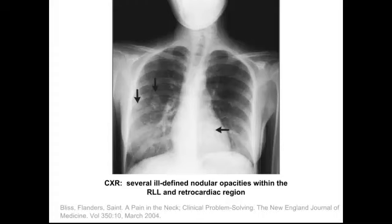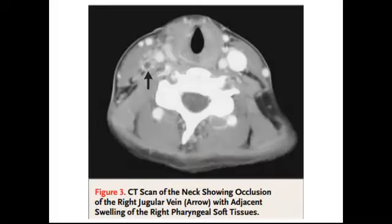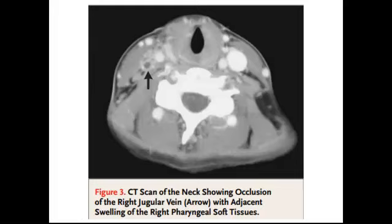Now we start getting suspicious for some kind of septic emboli causing these bilateral infiltrates. With her history of the unilateral sore throat, Lemierre's is starting to come to the top of our differential. To confirm this, we get a CT scan of the neck with contrast, and sure enough, it shows an occlusion of the right IJ — and there is our diagnosis of Lemierre's.